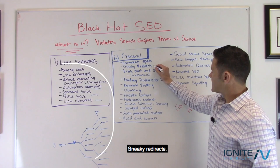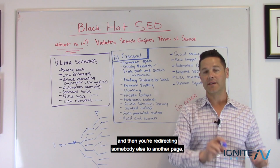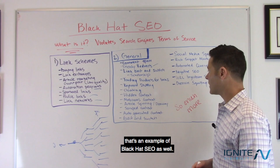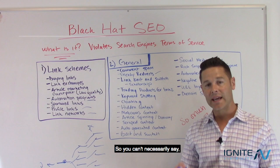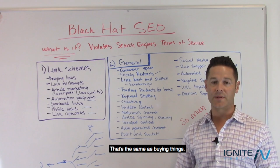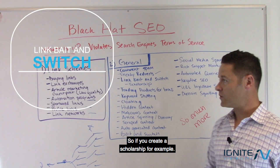Sneaky redirects: if you have one page that's ranking and then you're redirecting somebody to another page, that's an example of Black Hat SEO. Trading products for links is another thing you can't do — you can't say here's a product, link to my website, or here's some money, link to my website. That's the same as buying links.